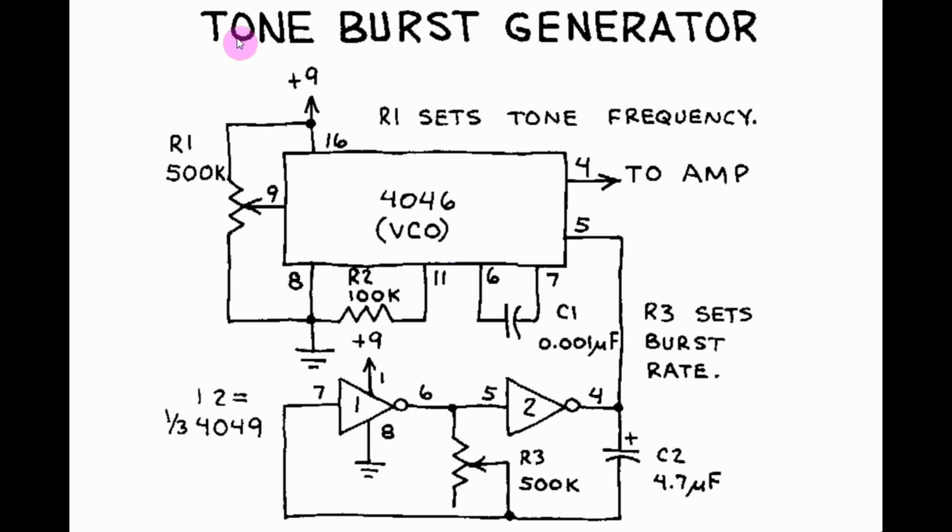This is the circuit diagram of the tone burst generator which is composed of two parts. We have the astable multivibrator and we have a voltage controlled oscillator.